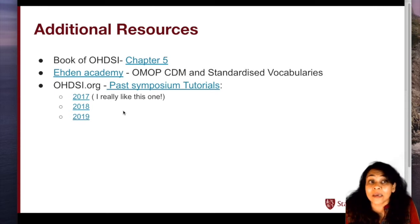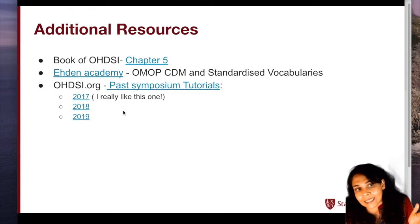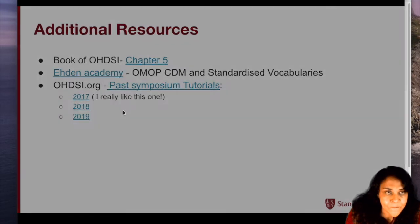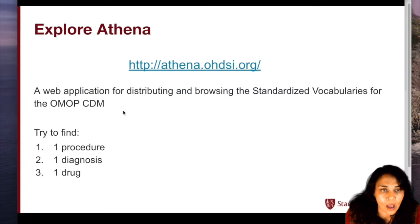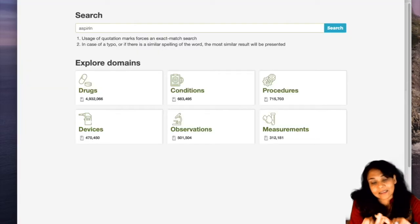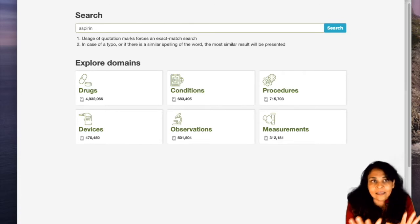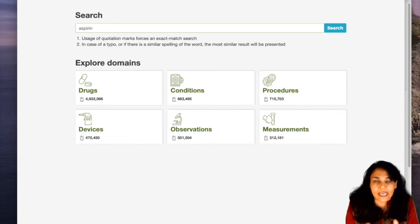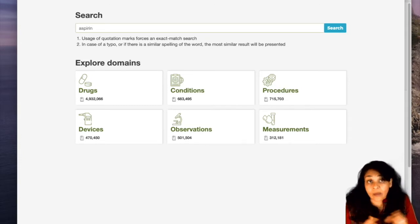These resources will be in the PDF of the tutorial slides. Athena is really a web interface — it's a GUI for those three concept tables: the concept table, the concept ancestor table, and the concept relationship table. You'll see how easy it gets to really start exploring anything you may be looking for. It's much easier than using SQL. I really urge you to use Athena.